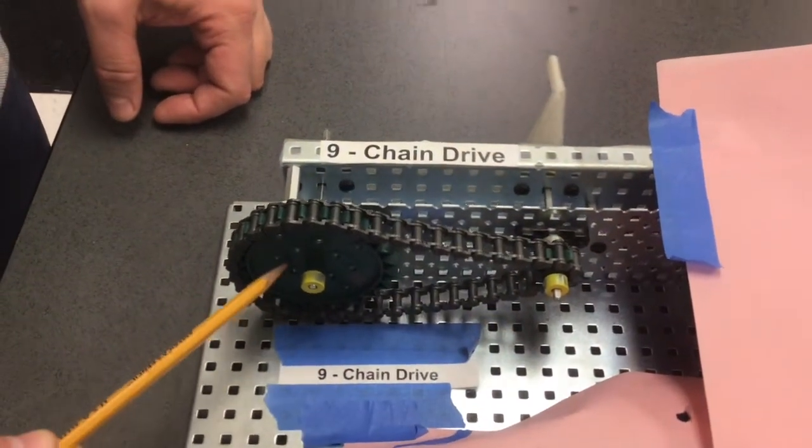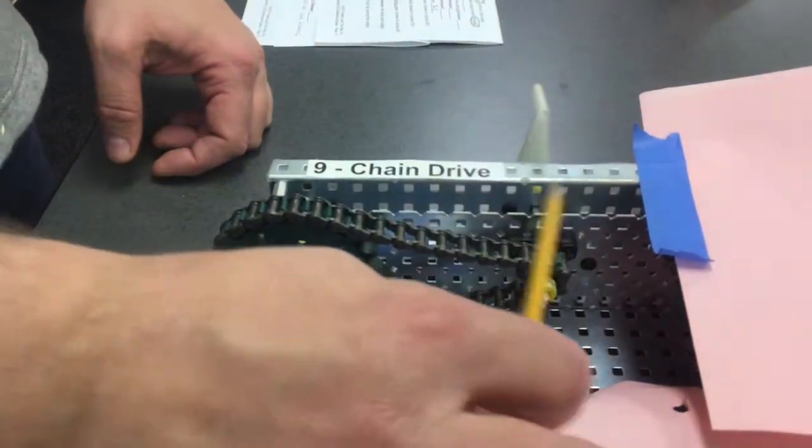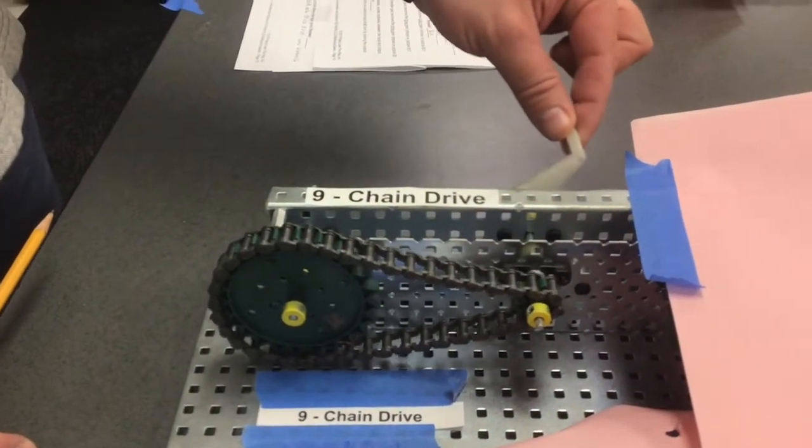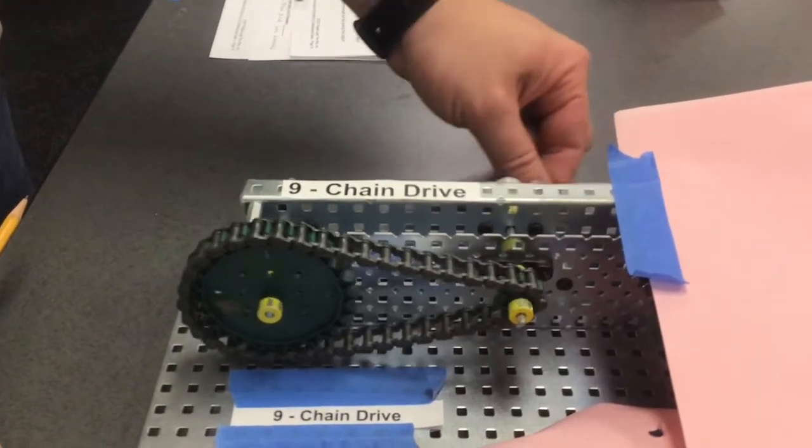Here we have two sprockets, a chain, two axles, and our hand crank for powering or moving the mechanism.